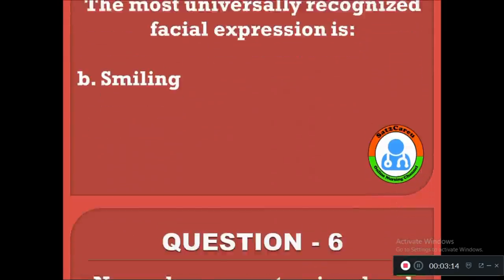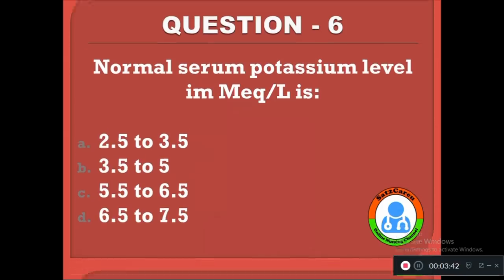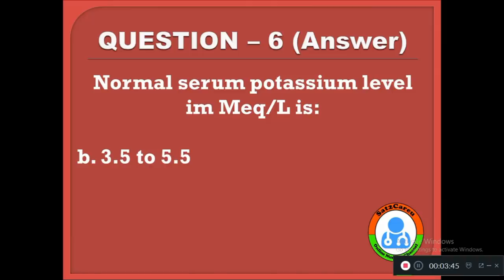Question 6: Normal serum potassium level in milliequivalents per liter is — option A: 2.5 to 3.5, B: 3.5 to 5, C: 5.5 to 6.5, D: 6.5 to 7.5. The correct answer is that normal serum potassium level is 3.5 to 5.5 milliequivalents per liter.